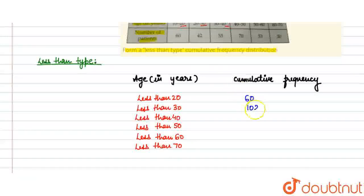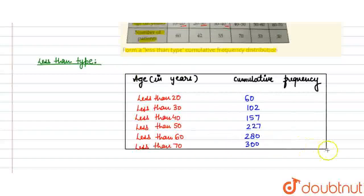60 plus 42 करिए 102, plus 55 करिए 157, plus 70 = 227, plus 53 = 280, plus 20 मतलब 300. तो ये होगी हमारी Less than table जो हमसे Question में कही गई थी Form करने के लिए. So we can say, this is the answer. Thank you.